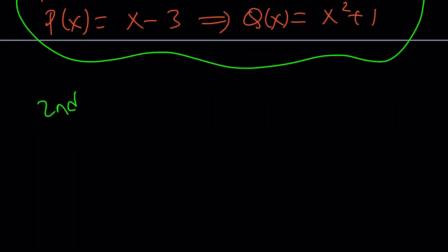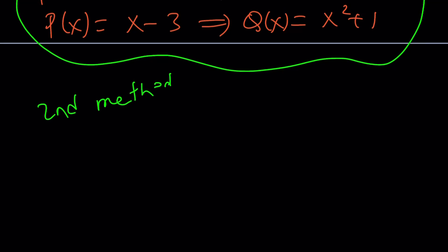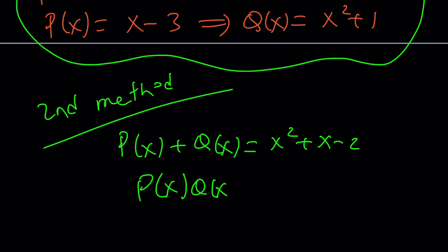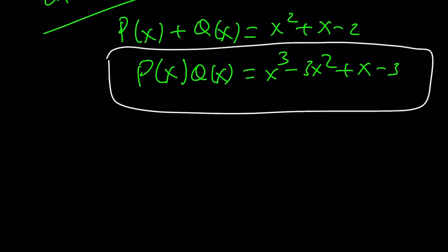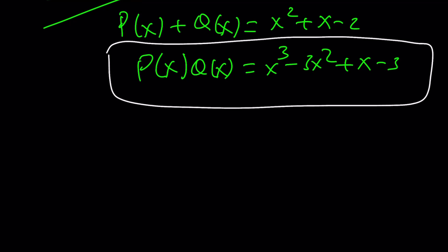This brings us to the end of the first method. Let's go ahead and take a look at the second method real quick, because the second method is real quick. So let me rewrite the problem: P(x) + Q(x) = x² + x - 2, and P(x)Q(x) = x³ - 3x² + x - 3. I'm going to start by factoring P(x)Q(x) because that's the product of two polynomials. Come on, who wouldn't do that, right? Why did you do the first method? Okay, just for fun.